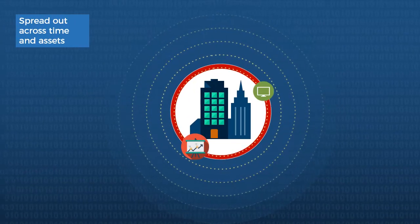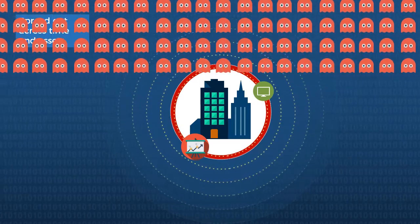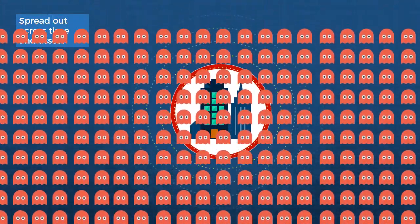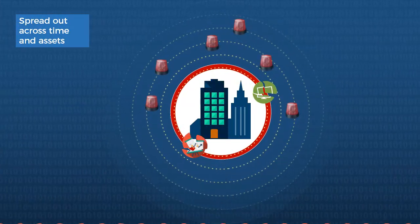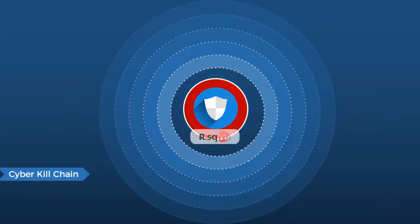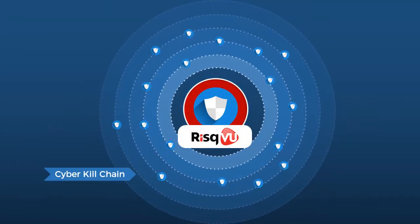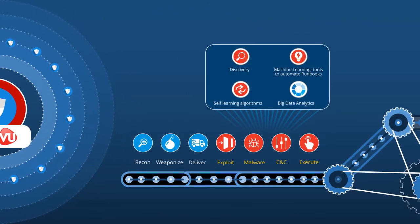Modern attacks do not occur as a single event at a single asset. They are usually spread out across time and assets using a variety of individual attacks in the cyber kill chain. Only the RiskView platform can provide a full view of various stages of the kill chain and piece together the entire attack campaign.